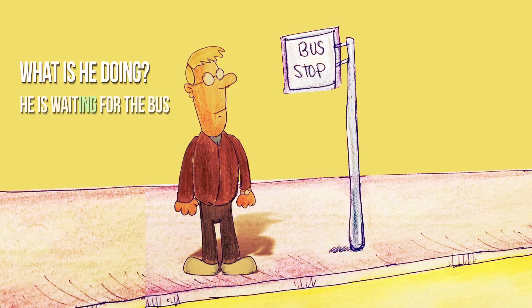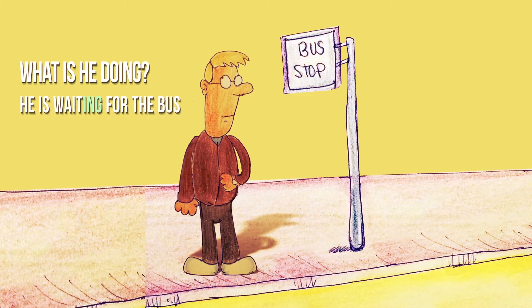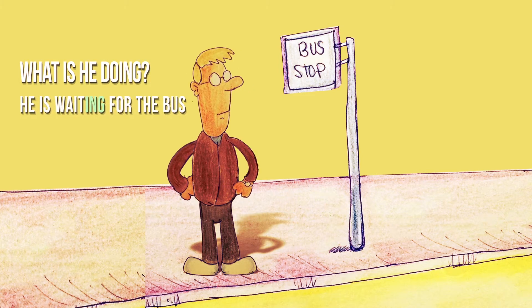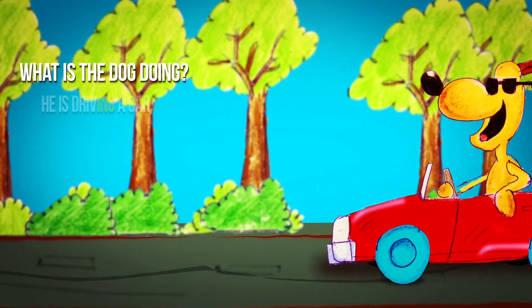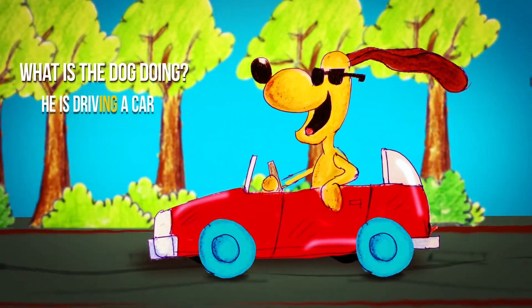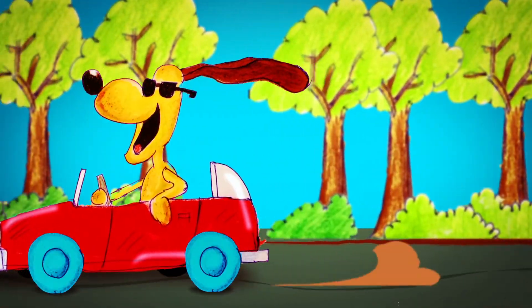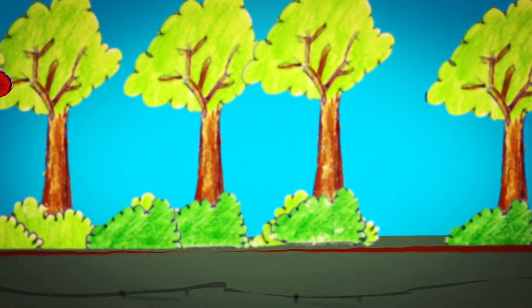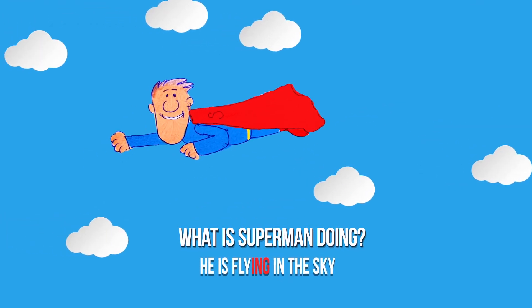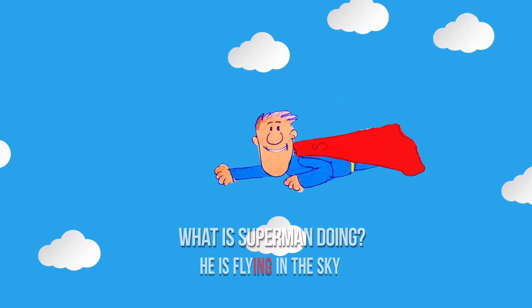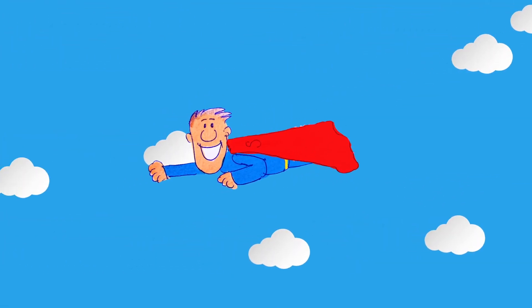For example: What is he doing? He's waiting for the bus. What is the dog doing? He's driving a car. What is Superman doing? He's flying in the sky.